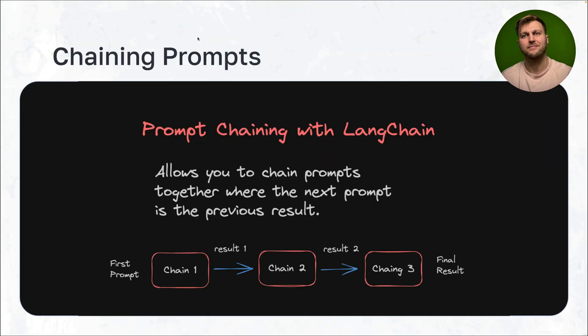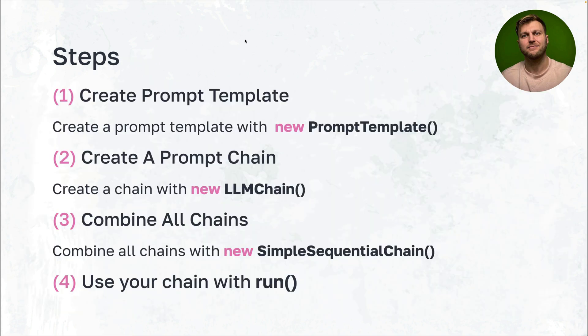Now let's talk about prompt chaining. Prompt chaining with LangChain basically allows you to chain prompts together where the next prompt uses the previous result as its input. You start your first chain with the first prompt; when the chain returns, the result is passed to your next chain, and so on — hence chaining prompts together — until you get the final result.